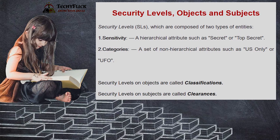Security levels are composed of two types of entities. One is sensitivity labels — for example, secret and top secret. The other is categories — for example, US only or UFO. Security levels on objects are called classifications, and security levels on subjects are called clearances. These are the multiple levels of security.